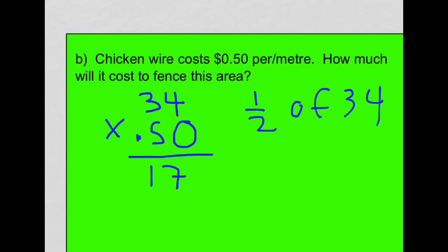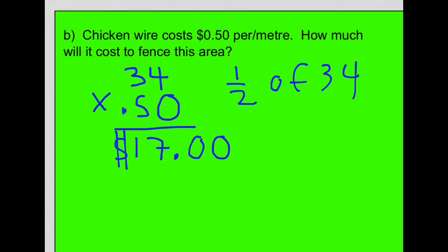And half of 34 is 17. Now, since this is a dollar amount, we should have two decimal spots and a dollar sign in front. So that's how much it would cost to buy the chicken wire needed to fence this area. That's a real life application of perimeter and something I actually did this long weekend.